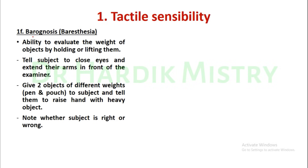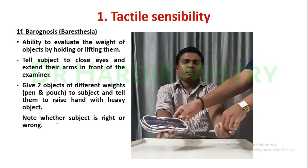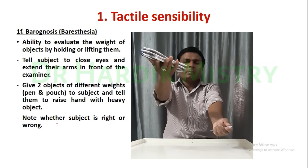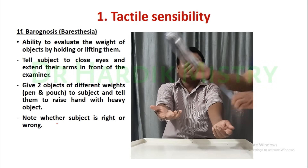Next is barognosis, also known as baresthesia. What is barognosis? It is the ability to evaluate the weight of an object by holding or lifting it. Tell the subject to close his eyes and extend their arms. Give two objects of different weights, for example a pen and a pouch, to the subject and tell them to raise the hand with the heavier object. Note whether the subject is right or wrong.